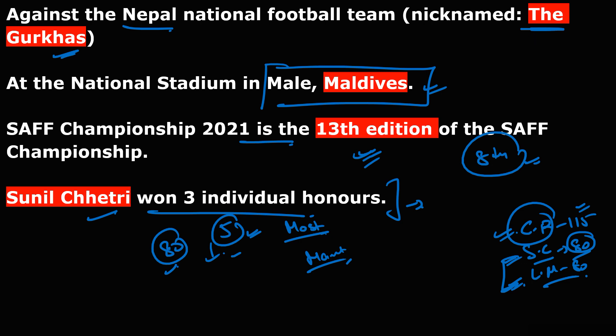The teams participating in this tournament were India, Maldives, Nepal, Bangladesh, and Sri Lanka. The main points to remember: India won the 8th SAFF Championship title, the final was held at Male International Stadium, it was the 13th edition, and Sunil Chhetri equalled Lionel Messi's record of 80 international goals.